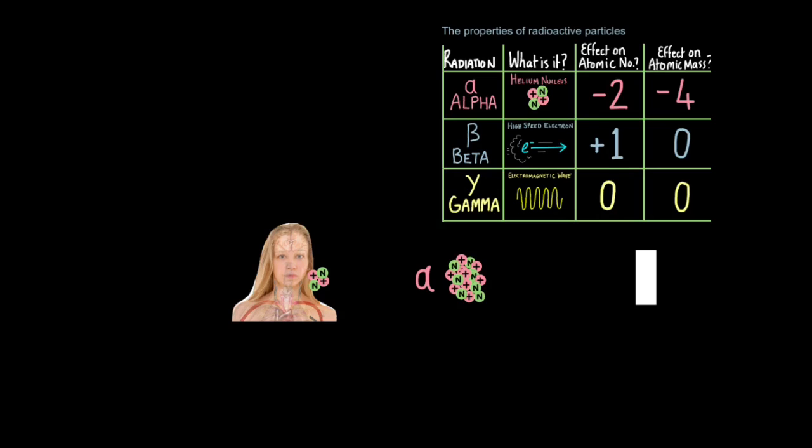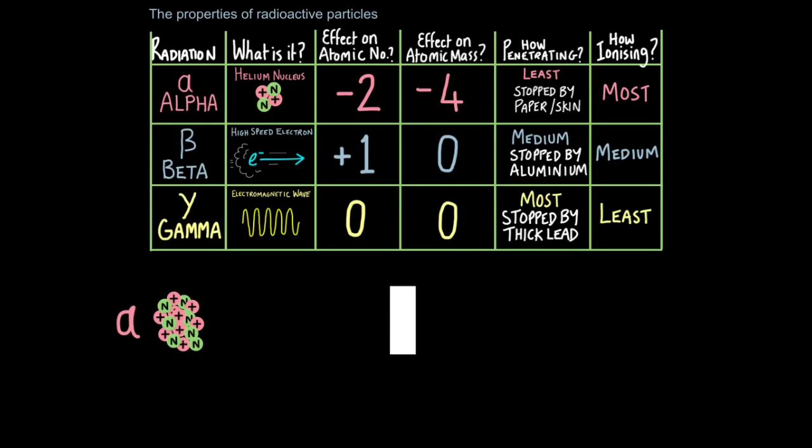You see once an alpha particle is in your body and it's surrounded by soft tissue not the dead layer of skin cells that basically surround your skin, then it can cause a lot of havoc in the body leading to cancer and radiation poisoning. So due to its size alpha radiation is actually the most ionizing. It's the most dangerous inside our body but it's a tough job getting it inside our body. So least penetrating stopped by paper and skin but most ionizing.